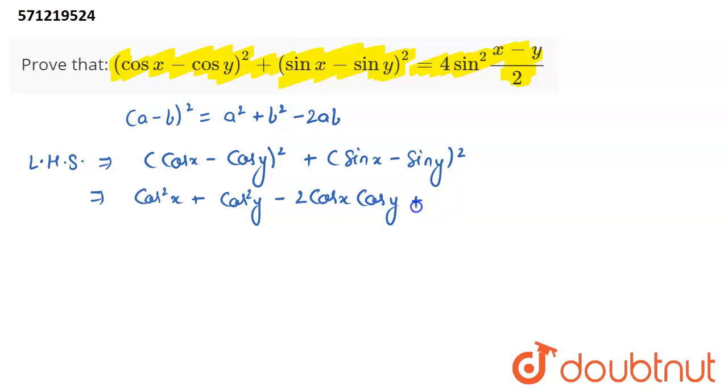Plus, now I am going to expand this particular term by using this formula. It becomes sin²x, because I have taken sin x as my a plus b², that is sin²y minus 2 into ab, sin x sin y.